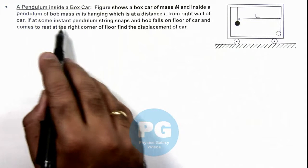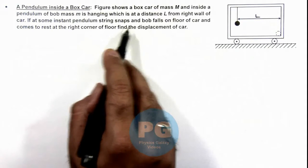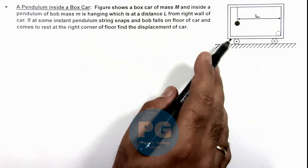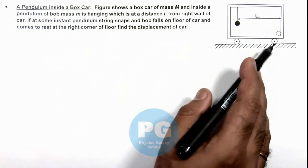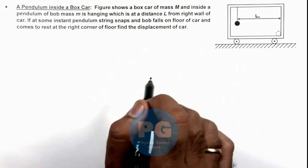If at some instant the pendulum string snaps and bob falls on floor of car and comes to rest at the right corner of the floor, we are required to find the displacement of this car.